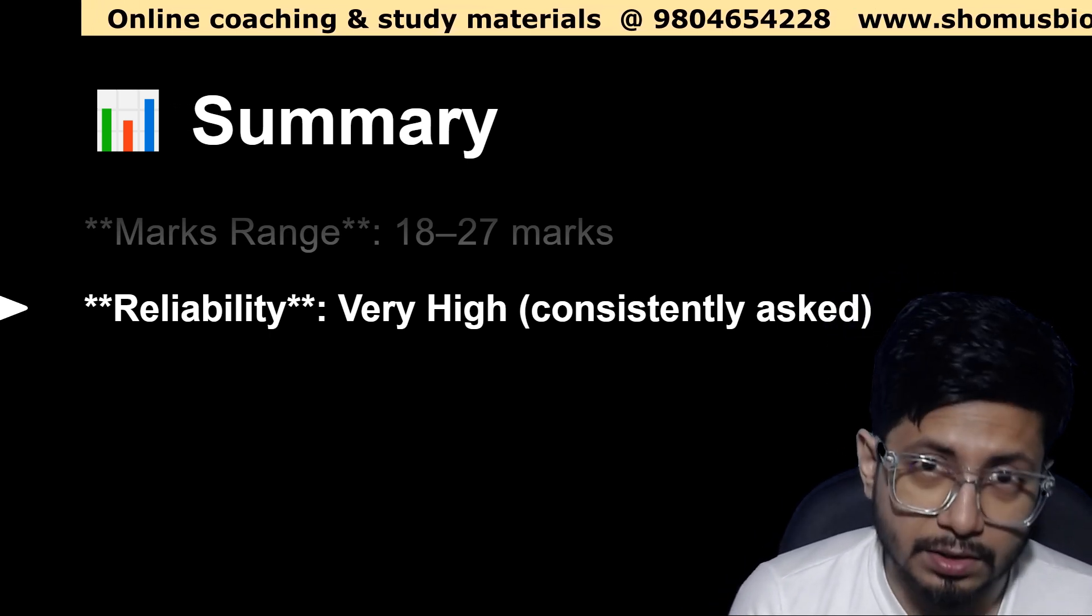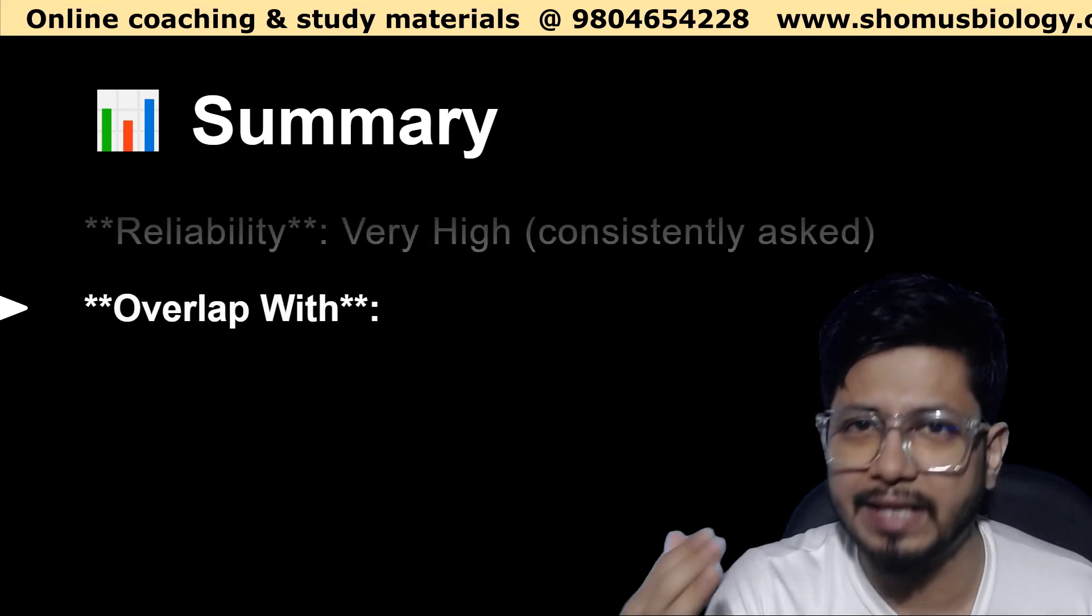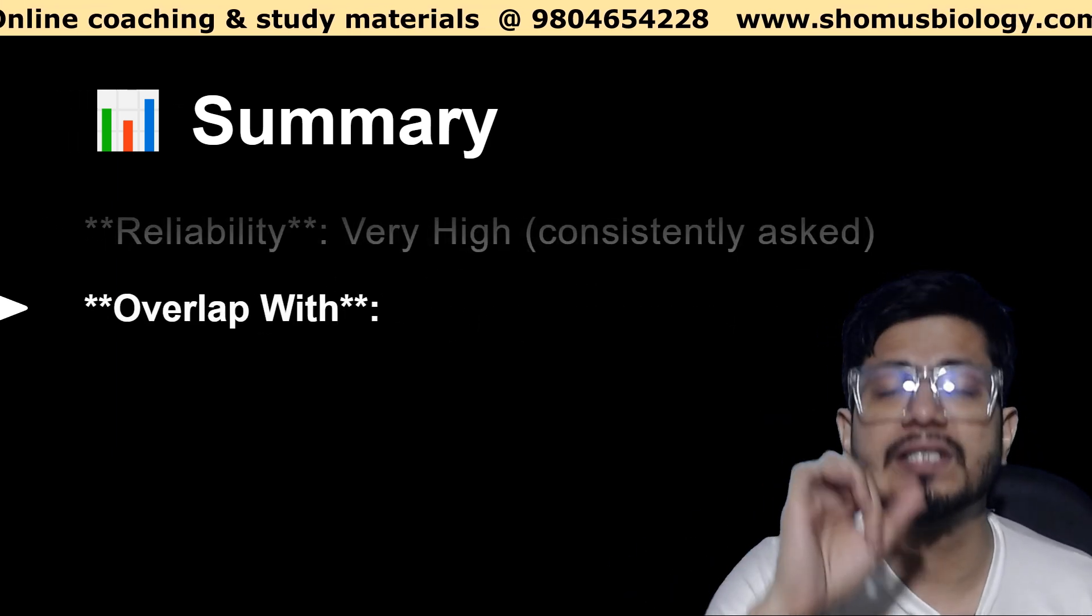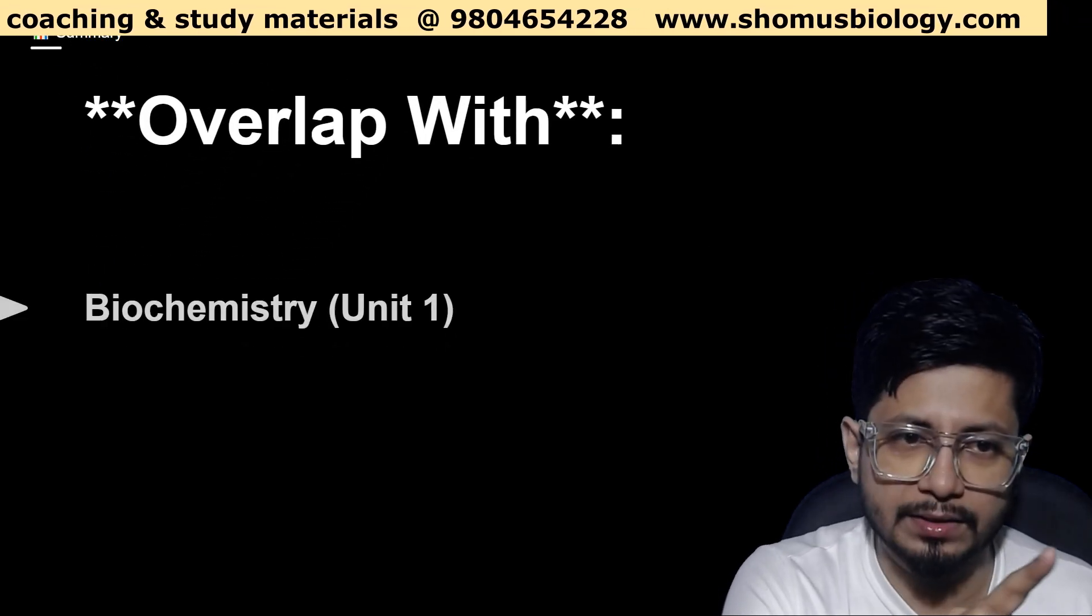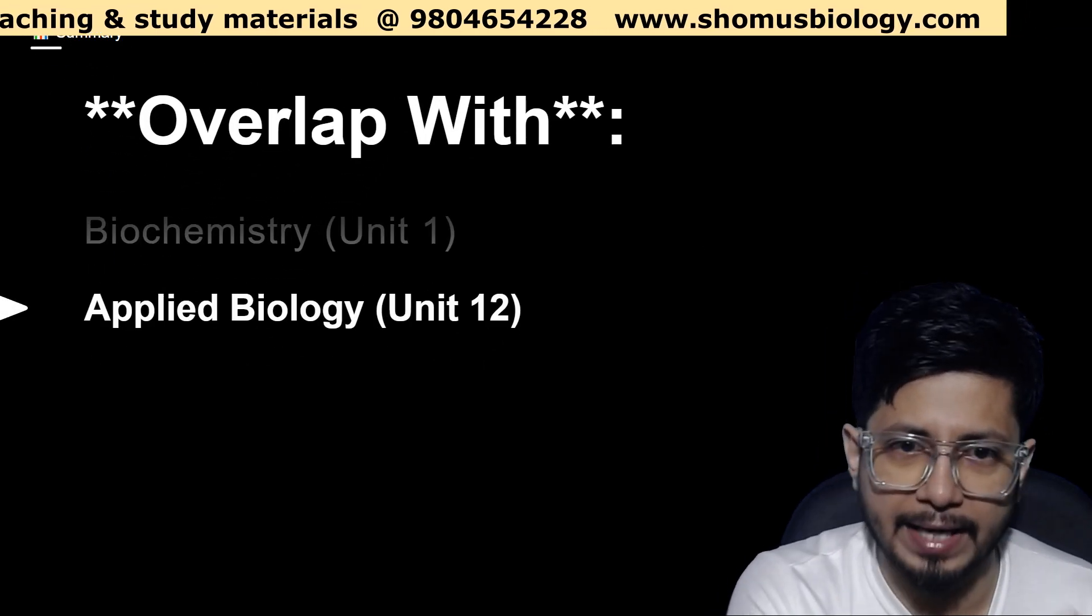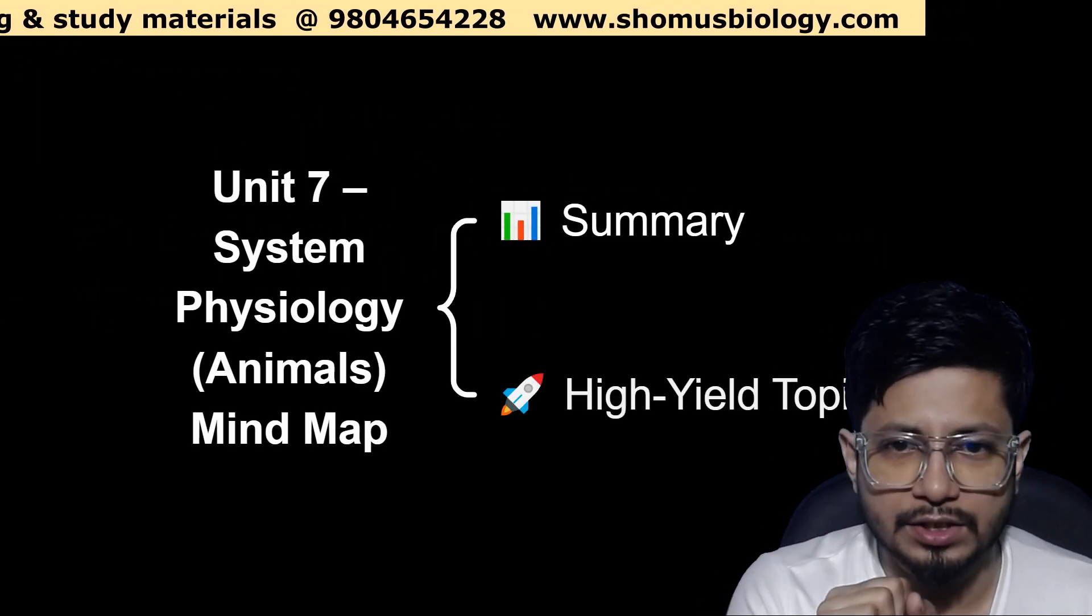But the problem is the probability of the questions. The question type changes a lot, and that's why it is not that economical. But unit 7, animal physiology or human physiology, has an overlap with biochemistry, that is unit 1, and applied biology, that is unit 12.